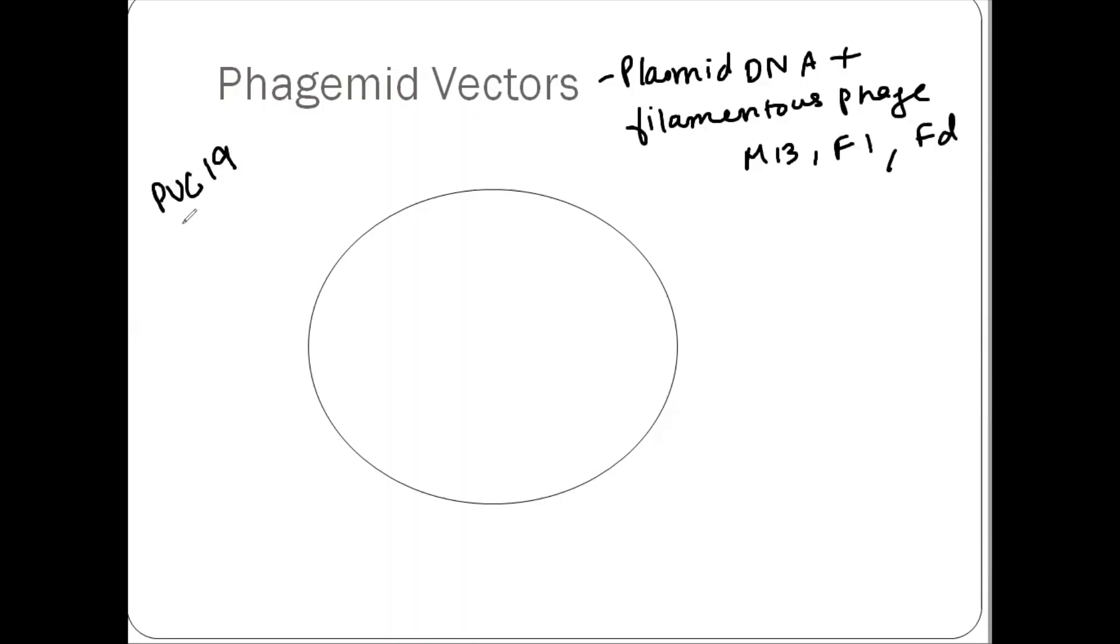So these phagemid vectors, they are derived from PUC19, plasmid University of California 19, which is approximately 2,958 base pairs. Now it has its origin of replication somewhere here. It has F1 origin of replication. And it has two strands. One is a positive strand, and one is a negative strand. So it is used for several other works also like sequencing.